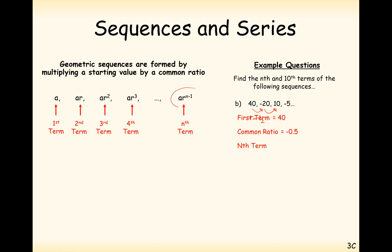We want to work out the nth term, so just applying the formula: it's 40 times minus 0.5 — make sure you put these in brackets — to the power of n minus 1. For the tenth term, substitute n equals 10: we get 40 times minus 0.5 to the power of 9. Plug that into your calculator and you get minus 5 over 64. Expect to get a fraction here, because as values get less and less, fractions will start to appear.